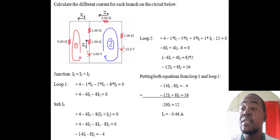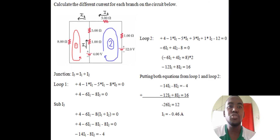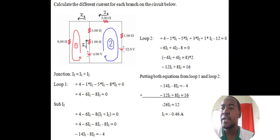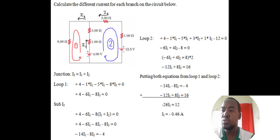We substitute I3 = I1 + I2 (from the junction) into loop 1: 4 minus 6·I1 minus 8·(I1 + I2) = 0. Expanding: 4 minus 6·I1 minus 8·I1 minus 8·I2 = 0. Combining and moving the constant: negative 14·I1 minus 8·I2 = negative 4.